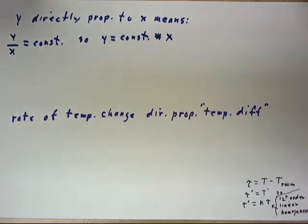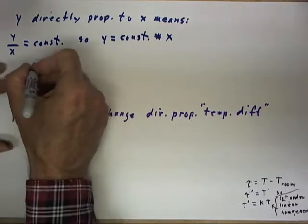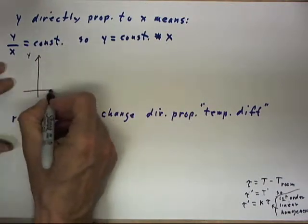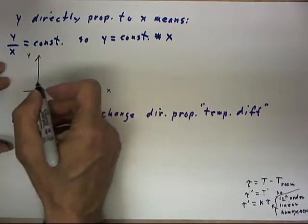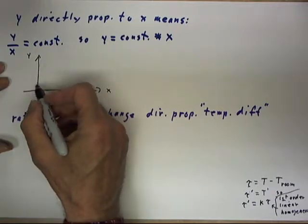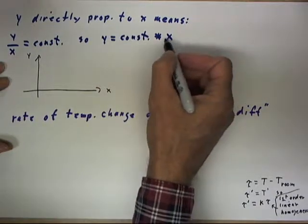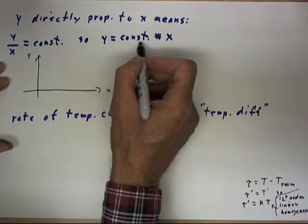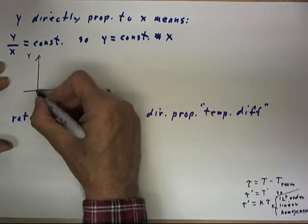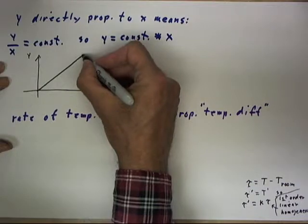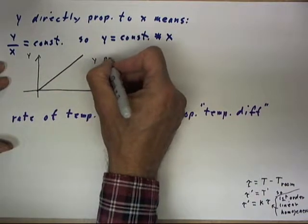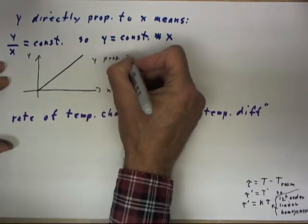If we were to draw a graph of y versus x, this would mean that y is a constant times x. When x equals zero, that would make y equals zero. And this constant means that this graph is going to have a constant slope. So this is a graph of the situation y is proportional to x.